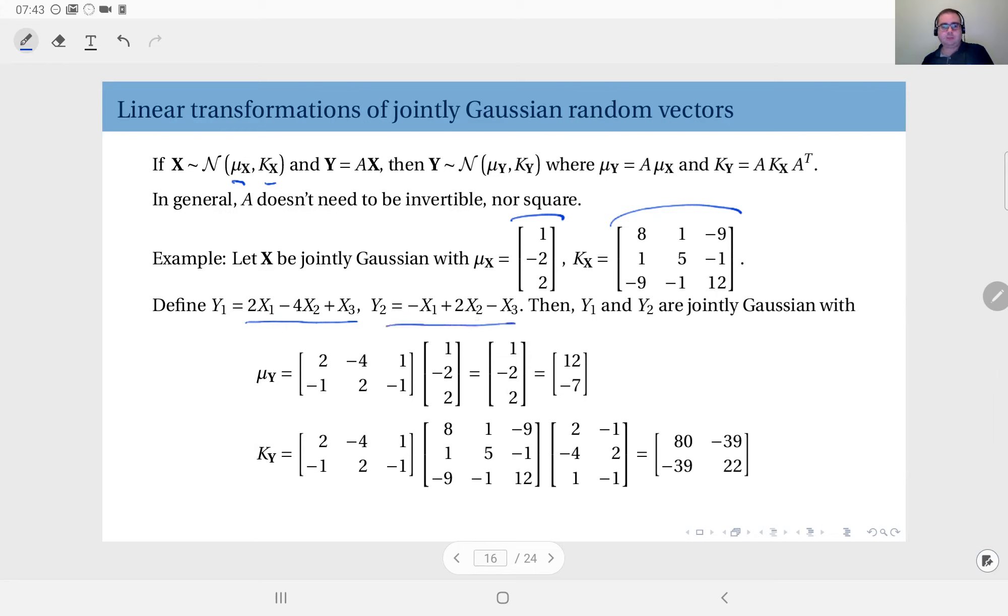Y1 is defined as 2 times X1 minus 4X2 plus X3, and Y2 is defined as minus X1 plus 2X2 minus X3. This will be based on this observation: if X is jointly Gaussian with these parameters and Y equals A times X, then Y itself is also jointly Gaussian with these parameters.